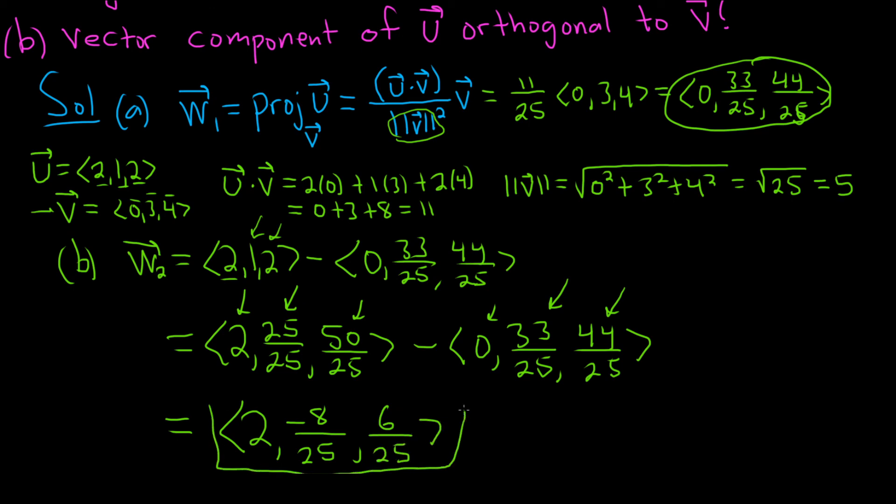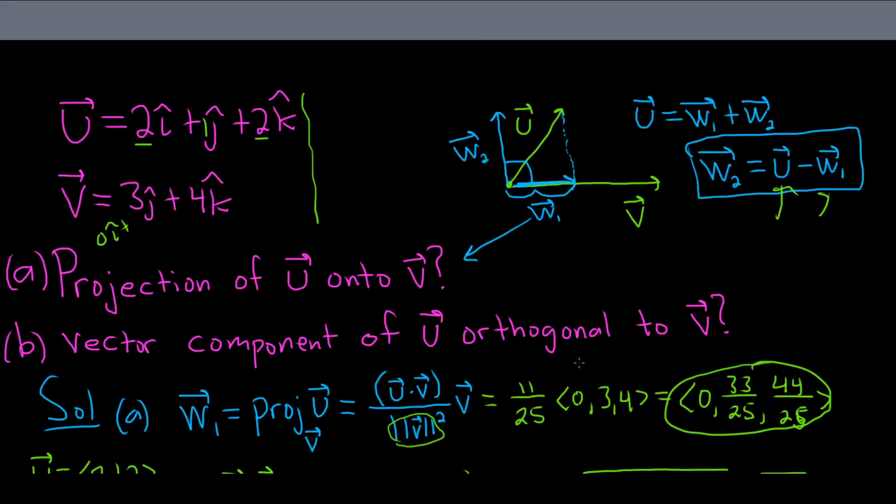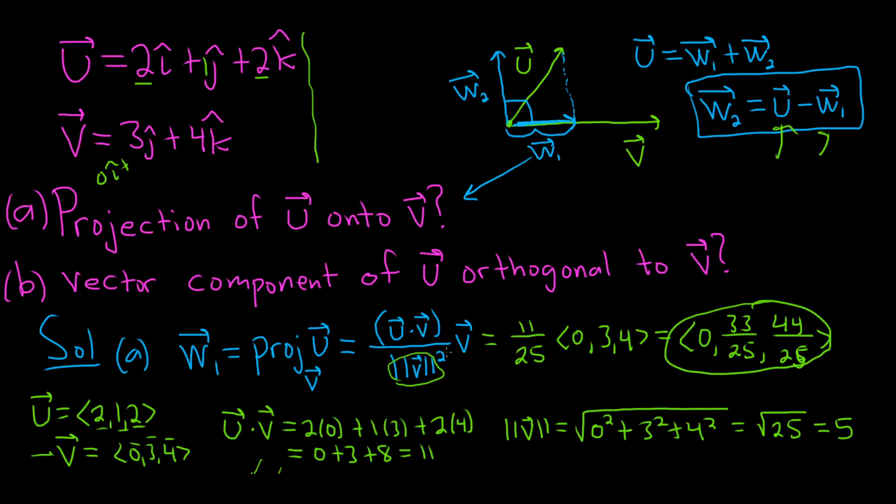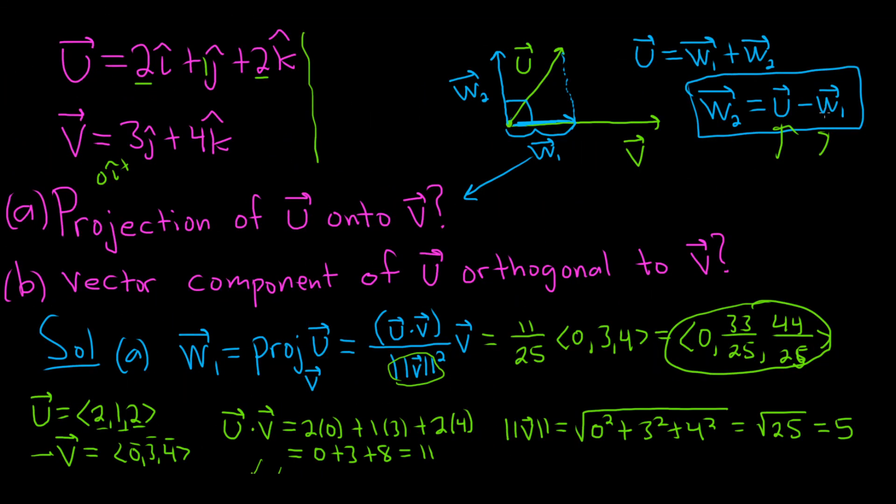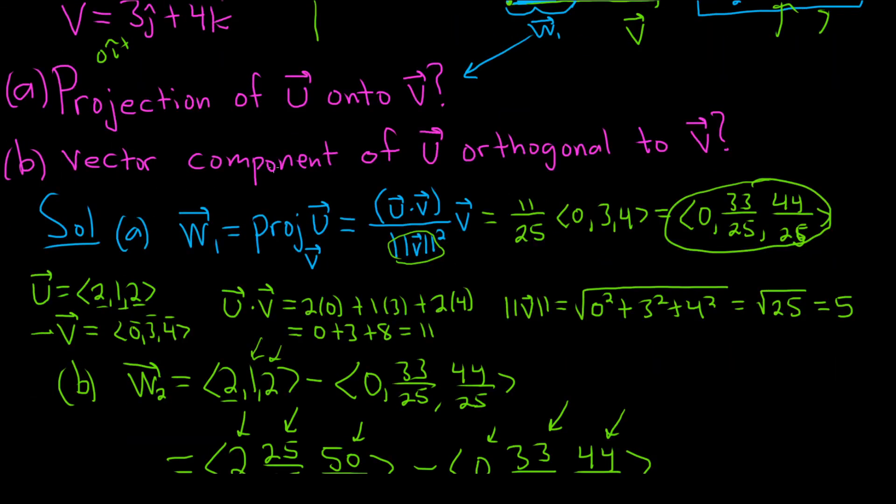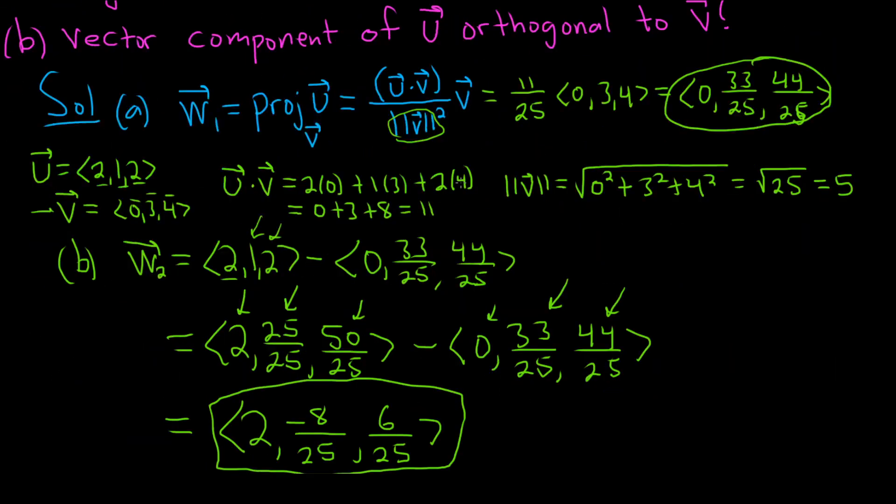That's the vector component of u that is orthogonal to v. Quick recap. For part A, use this formula. For part B, use this formula here. You already have w1 and u, so just subtract them. That gives you the vector component of u that is orthogonal to v. I hope this video has been helpful.